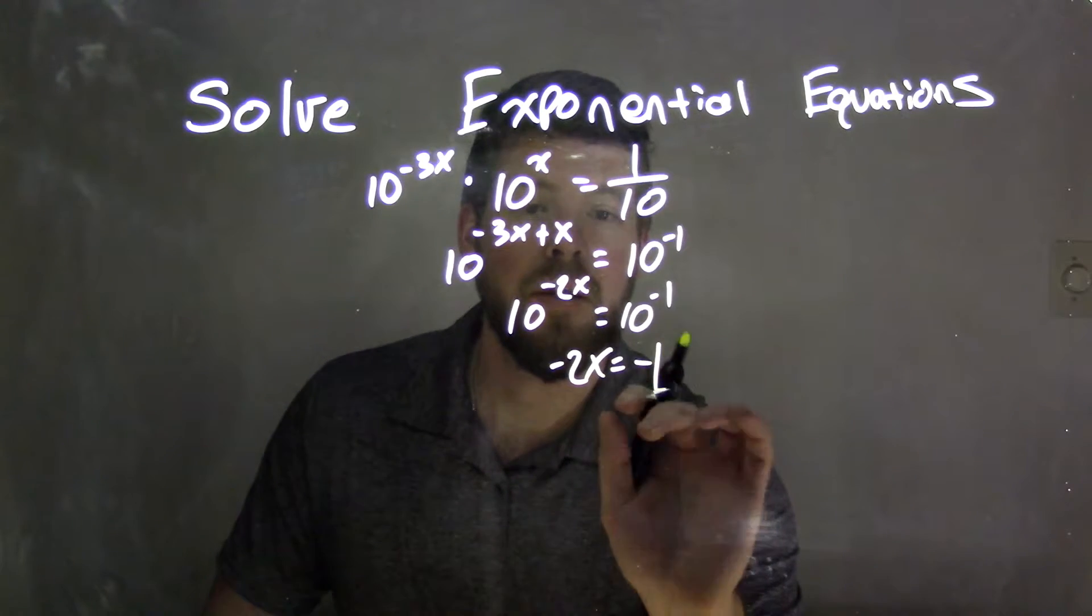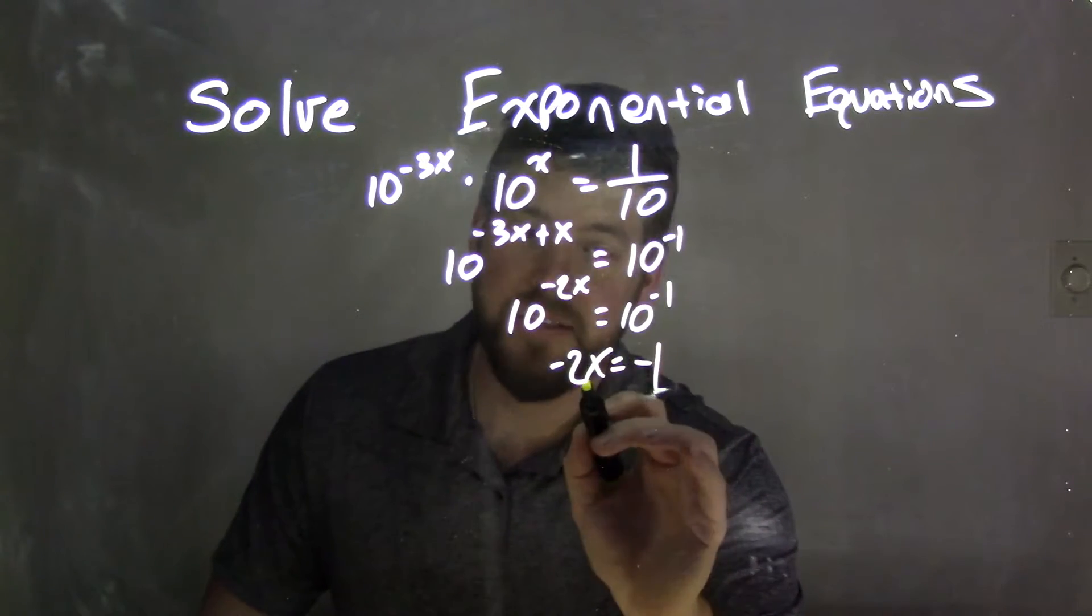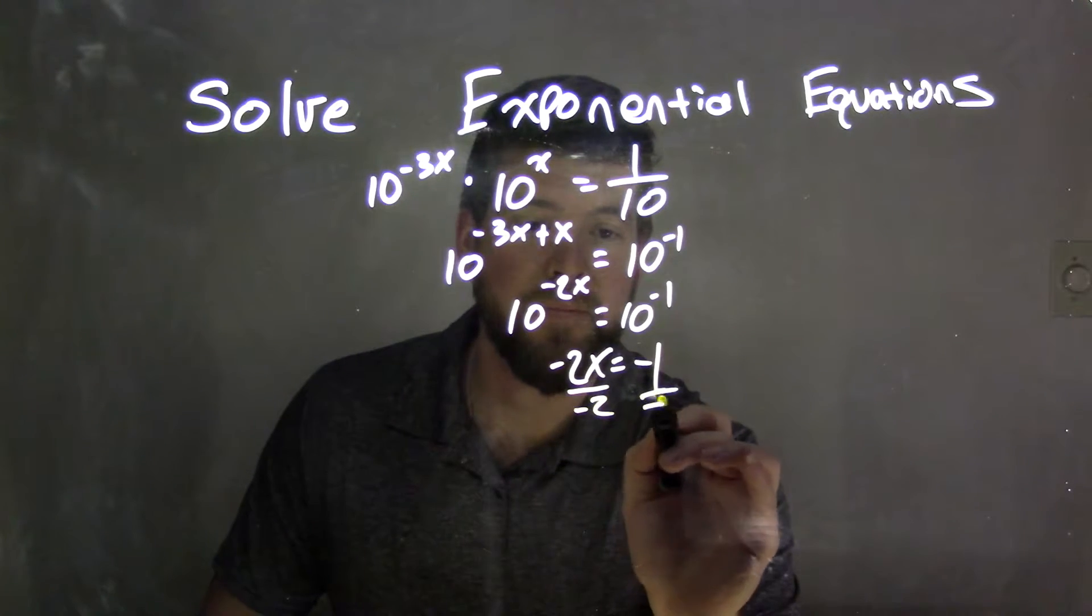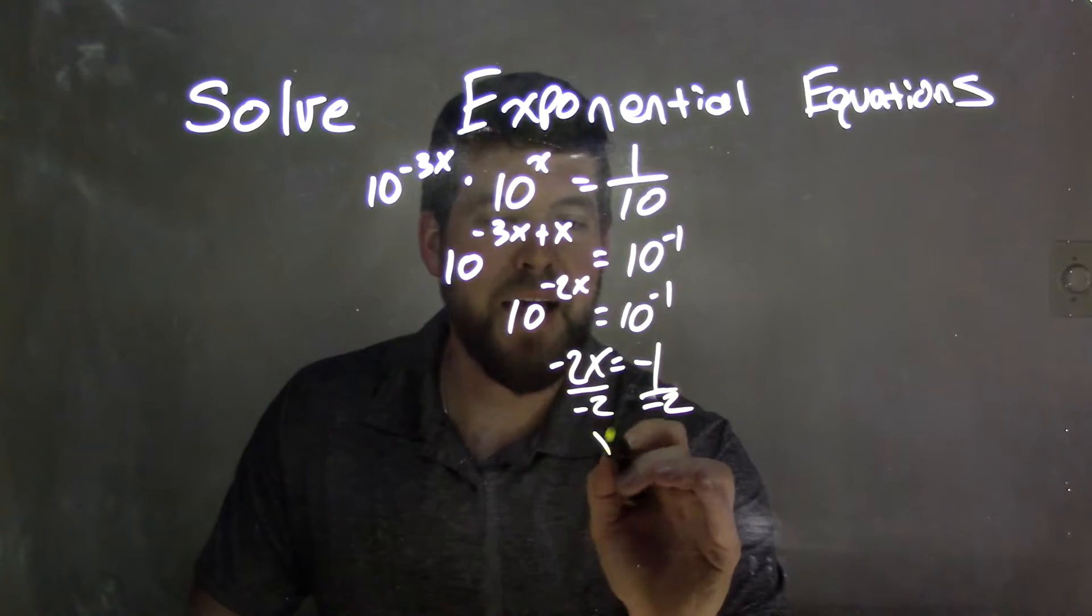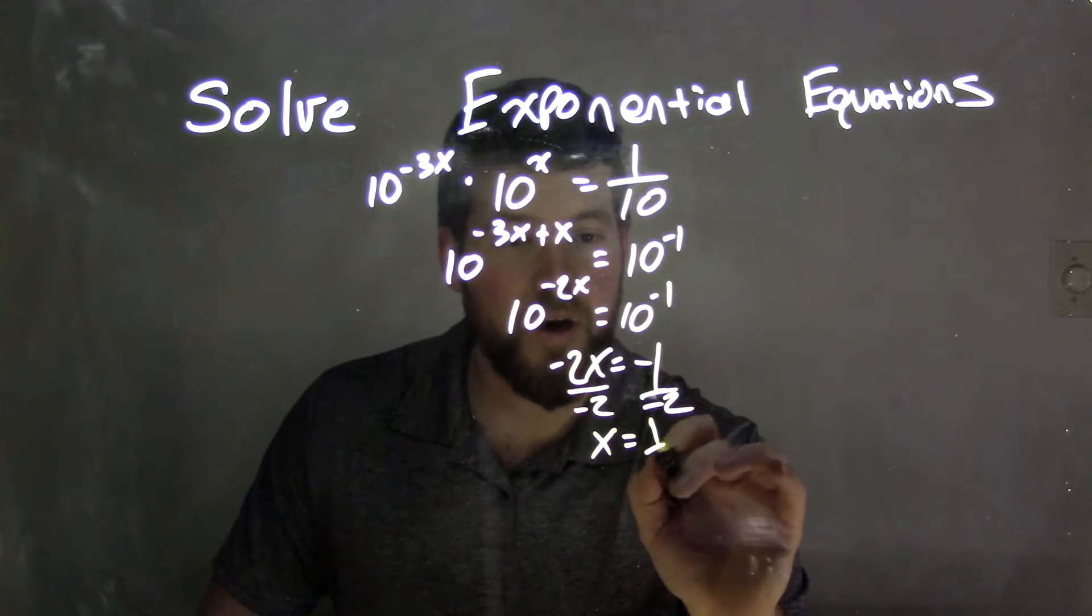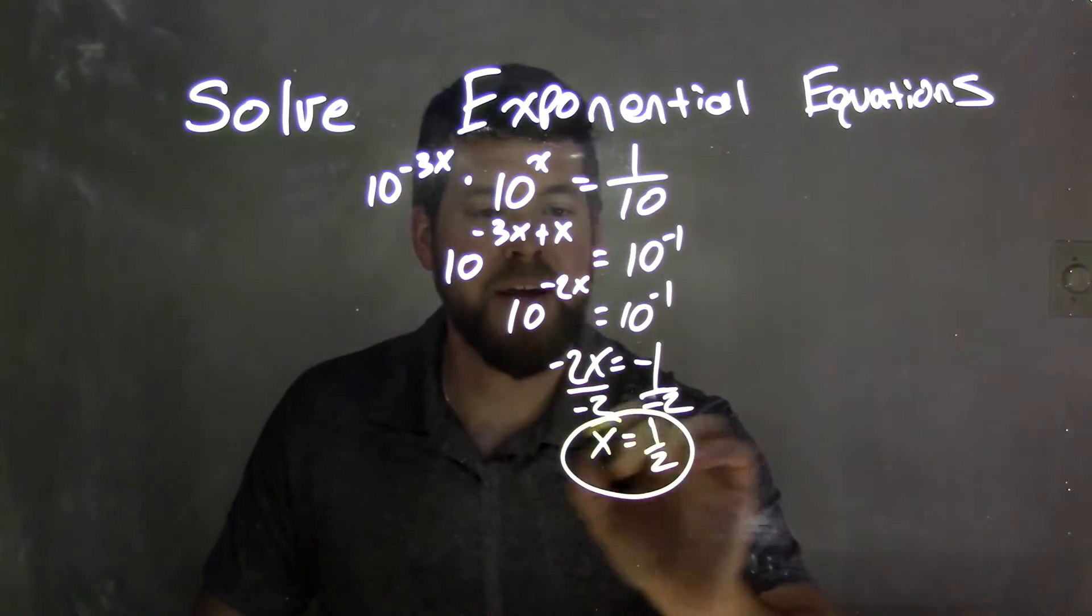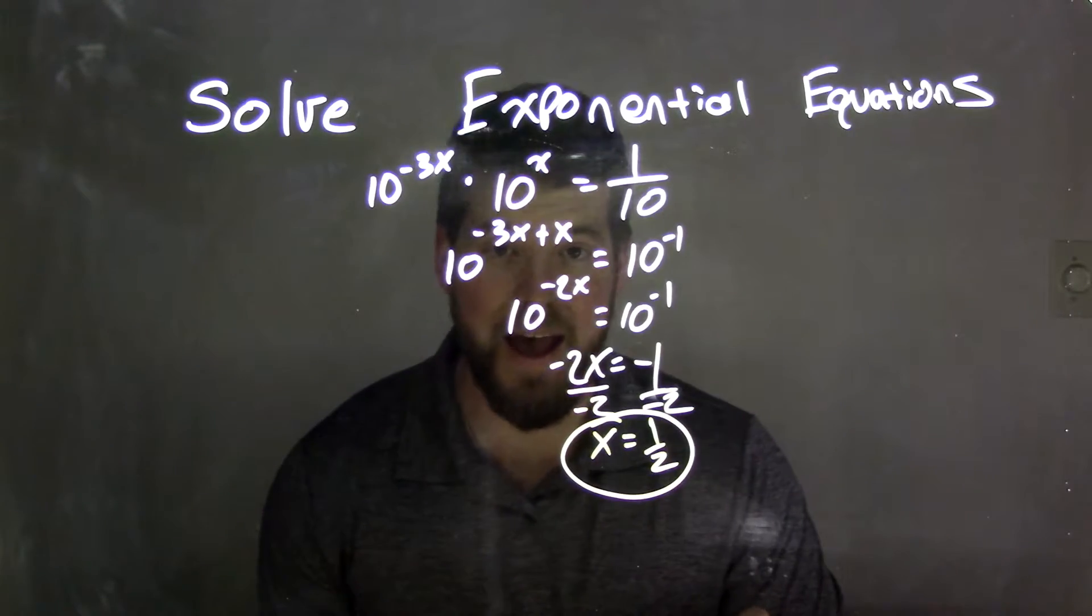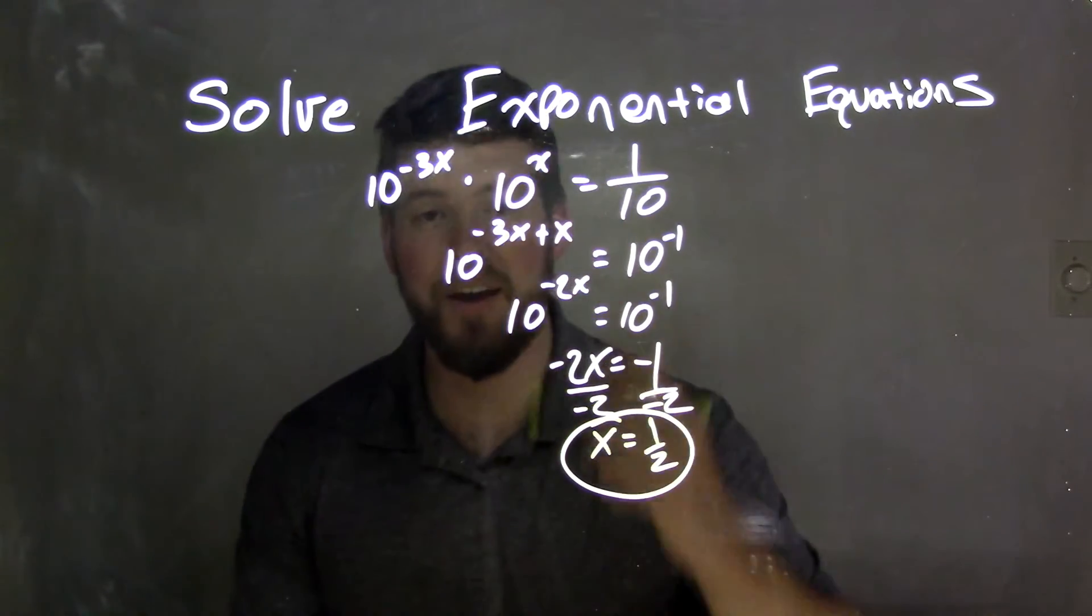And then, now we just divide by negative 2. And x equals -1 divided by -2, which is 1/2. And our final answer is x equals 1/2. Our solution to this equation.